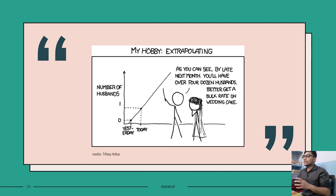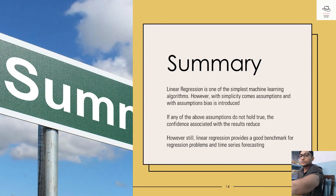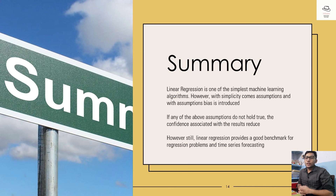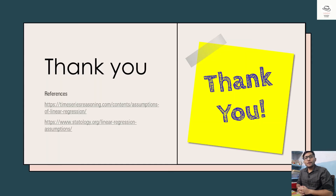To summarize: linear regression is one of the simplest machine learning algorithms. However, with simplicity comes assumptions, and with assumptions, bias is introduced. If any of the assumptions do not hold true, the confidence associated with the results reduces. Still, linear regression provides a good benchmark for regression problems and time series forecasting — most time series based modeling uses concepts from linear regression. If you're new to the channel, don't forget to subscribe, hit the bell icon, and share with your friends and data science enthusiasts. See you in the next video, have a nice day.